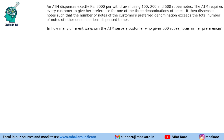The first question is: in how many different ways can the ATM serve a customer who gives 500 rupee notes as her preference? We have 100, 200 and 500 rupee notes and need to get a total of 50, that is ₹5000. First, we can give 10 notes of 500, 0 of 200, 0 of 100 — total is 50, satisfied.